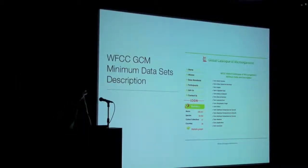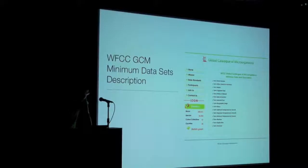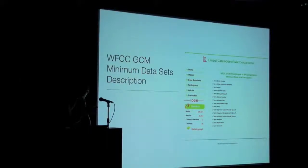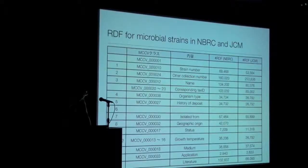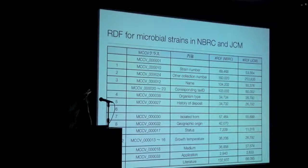This figure shows the minimum data set description defined by MIxS, or Minimum Information about a Microorganism. At the first step, I developed the predicate terms in MCCV ontology to be able to describe these data standards. By using these predicates, we have created linked data for information on cultured microbiome strains from BRC and JCM. As a result, we created linked data, and this table shows the number of RDF triples covering the minimum depth of information on cultured microbiome strains using MCCV.